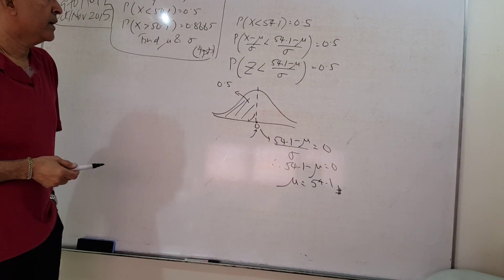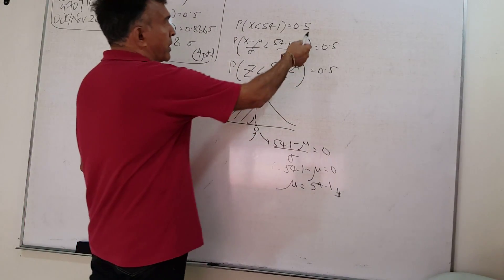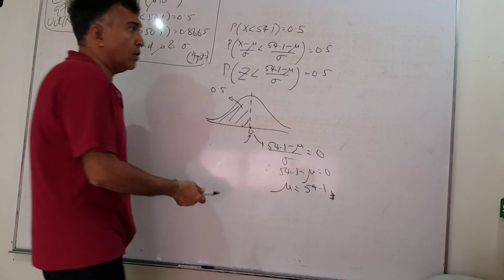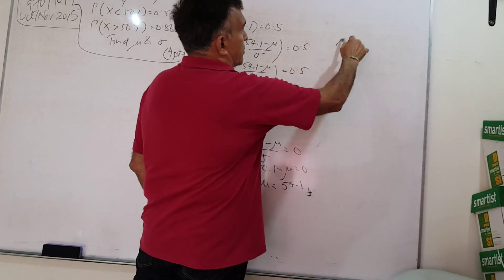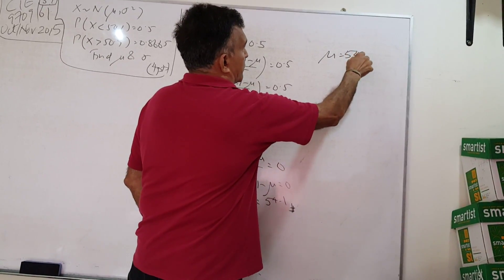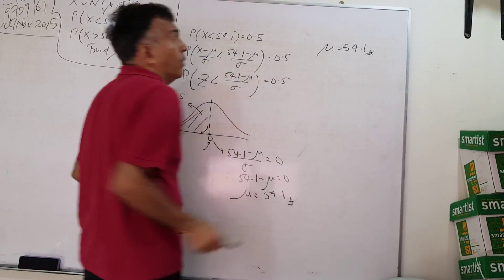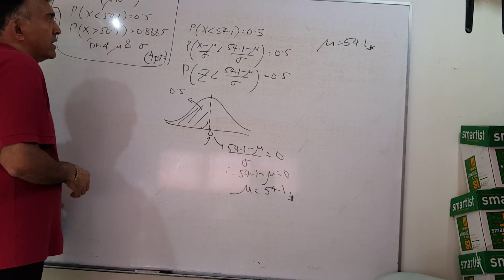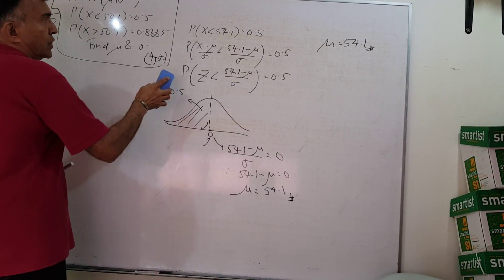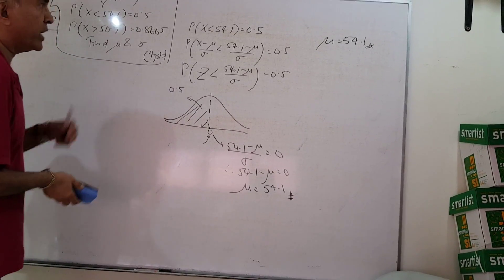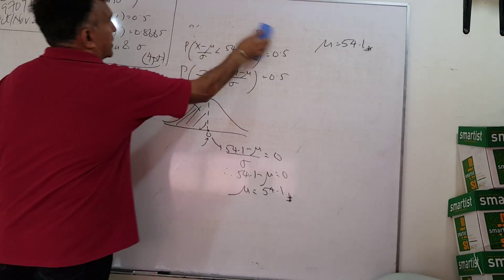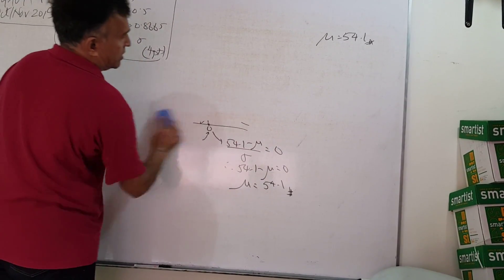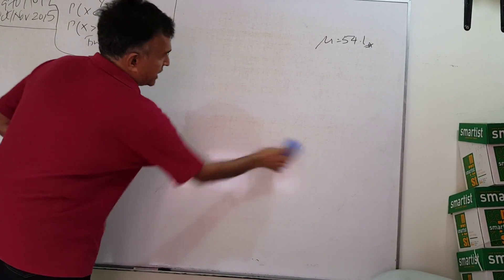So the fact that they gave us a probability 0.5, our life became a bit easier. Let's write down μ equals 54.1. Now we want to find σ. To do that let's go ahead and use the second probability statement.